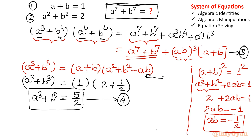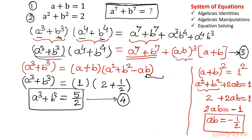So what we are doing is finding all the components of equation 3. Up to this point, we have resolved: a³+b³ is done (equals 5/2), ab is done (equals −1/2), and a+b we know equals 1. The only thing we still need to find is a⁴+b⁴. So now let us find a⁴+b⁴.